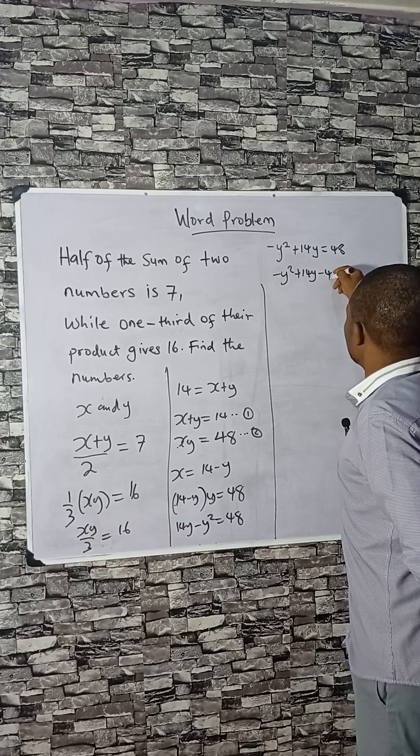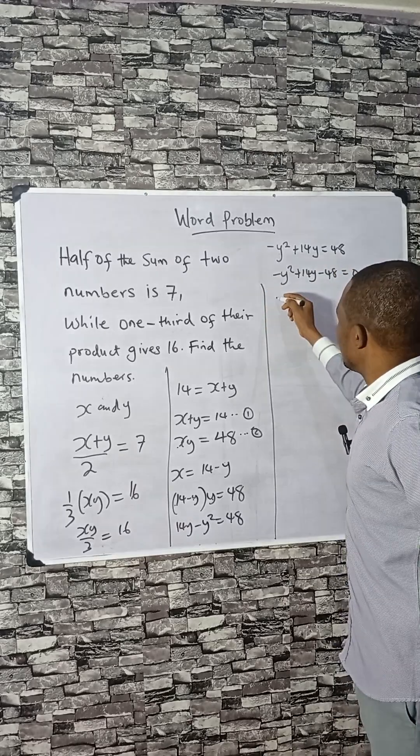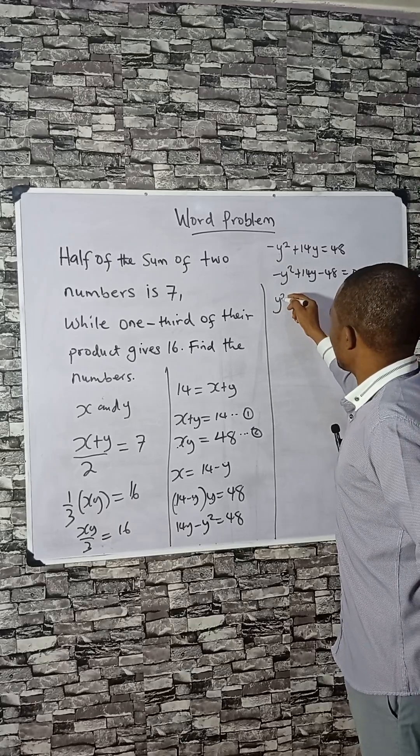Minus y squared plus 14y minus 48 equals 0. Let's take care of this negative sign by multiplying by minus 1.